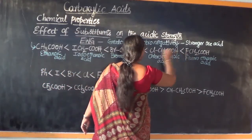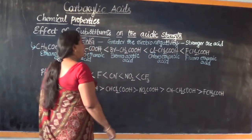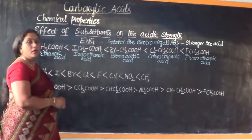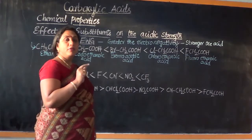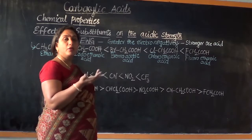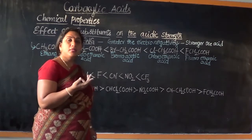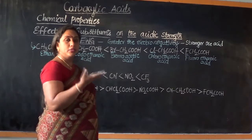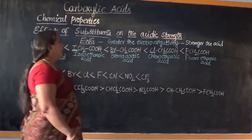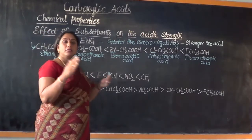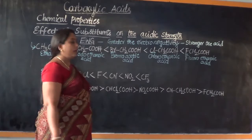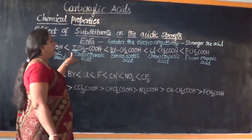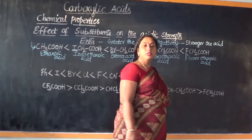As you know, chlorine is more electronegative than bromine, and bromine is more electronegative than iodine. As we come down the halogen group, we find fluorine, chlorine, bromine, iodine — and astatine, which we do not consider for practical purposes because it is radioactive. So we always consider these four: fluorine, chlorine, bromine, and iodine. As we come down the group, atomic size increases and electronegativity decreases. Therefore, iodine has the least electronegativity and fluorine has the highest electronegativity.